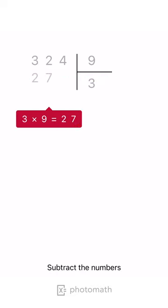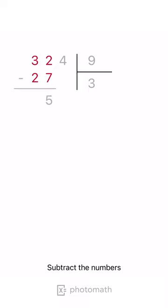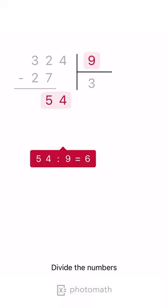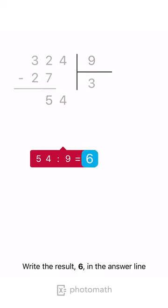Subtract the numbers. Bring down the next digit, 4. Divide the numbers. Write the result, 6, in the answer line.